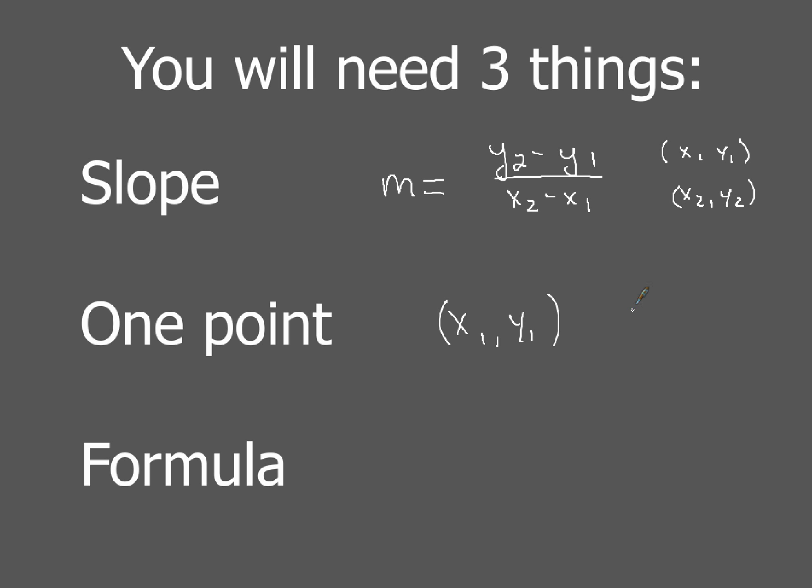And then the second thing that you're going to need is you're going to need a formula. Now there are two formulas you could use. You could either use the point-slope formula, which is y minus y1 equals m times x minus x1, or you could simply use the y equals mx plus b formula to determine the equation of the line.